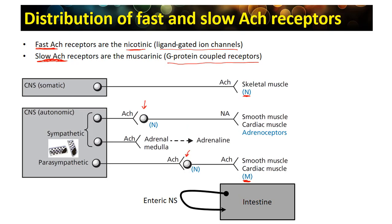The transmission of the signal through the synapses is going through nicotinic receptors, while at the affected tissue it is muscarinic receptors. To summarize: nicotinic receptors are present at the neuromuscular junction in somatic neurons, and they are present in the synapses of the autonomic nervous system whether it is sympathetic or parasympathetic neurons, while muscarinic receptors are present in smooth muscles and cardiac muscles.